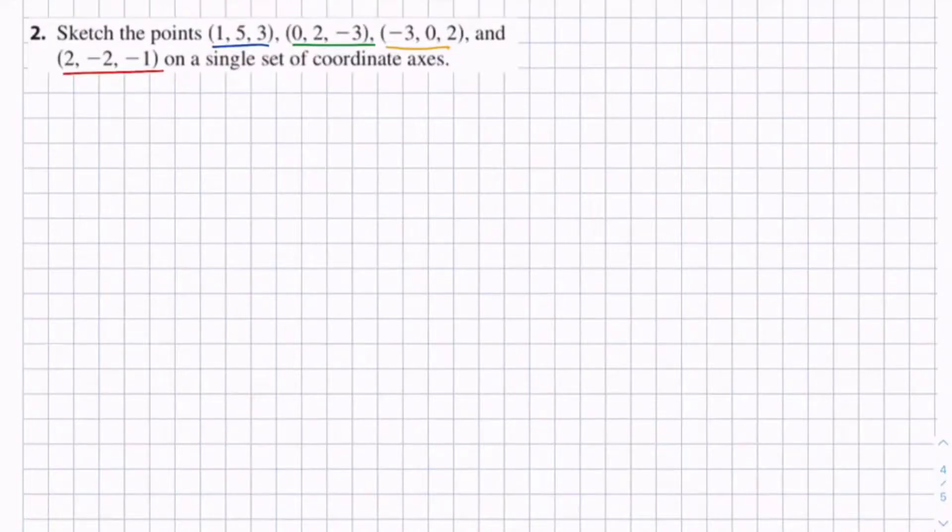Welcome to the math range. So for question 2, we're going to sketch the points (1, 5, 3), (0, 2, -3), (-3, 0, 2), and (2, -2, -1) on a single set of coordinate axes.